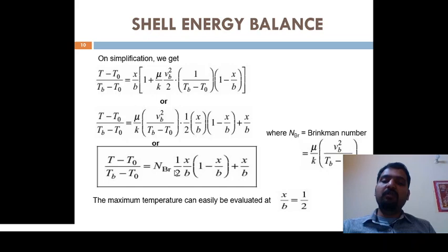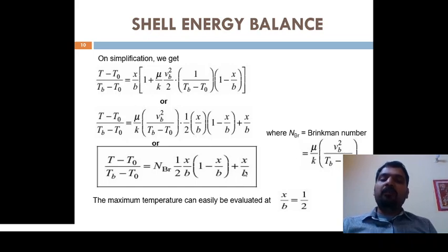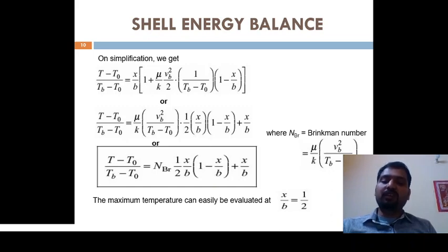The final simplified temperature profile in terms of viscous heat dissipation is: (T − T0)/(Tb − T0) = NBr · (1/2)·(x/b)·(1 − x/b) + x/b, where NBr is the Brinkman number representing heat generated due to viscous dissipation.